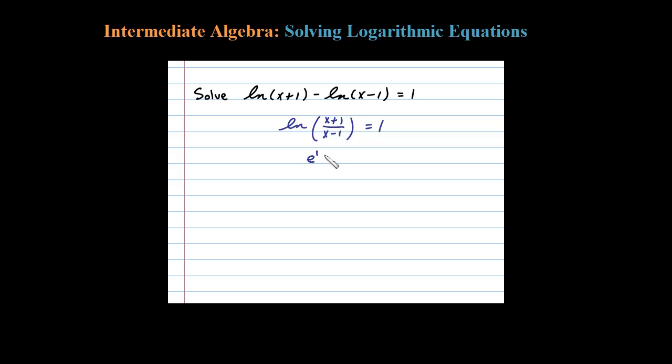What we're left with here is a rational equation which we could solve like normal. To do that, let's multiply both sides by x minus 1.